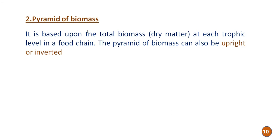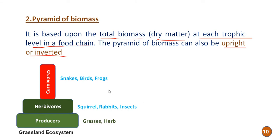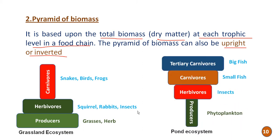The pyramid of biomass is based on the total dry matter at each trophic level. It can also be upright or inverted. In a grassland ecosystem the pyramid of biomass is upright — more producers, fewer carnivores. In a pond ecosystem it is inverted, as the total biomass of large fishes exceeds that of the phytoplankton (the producer).